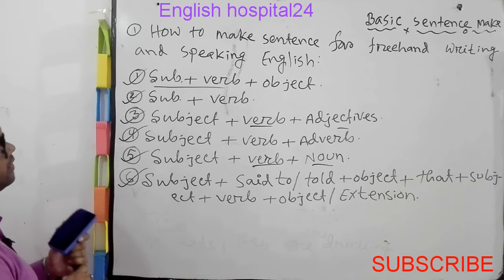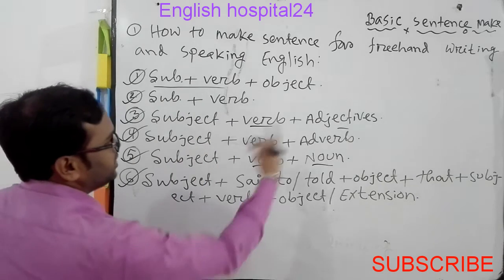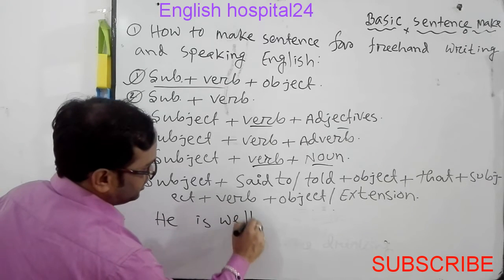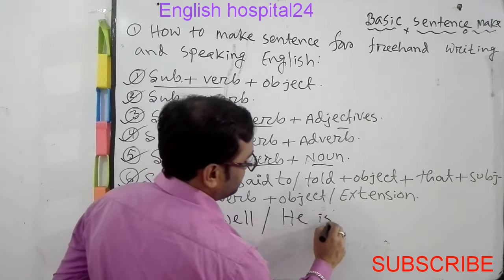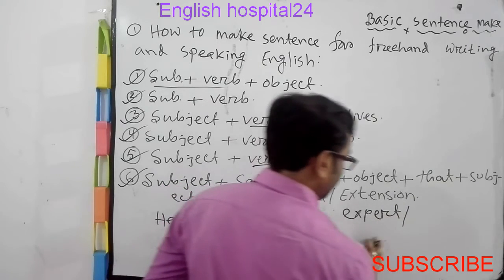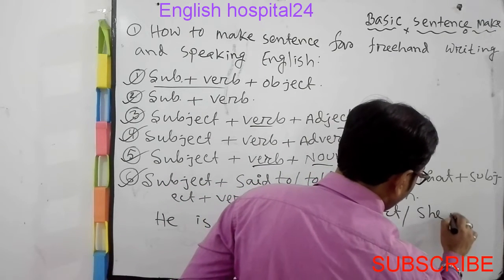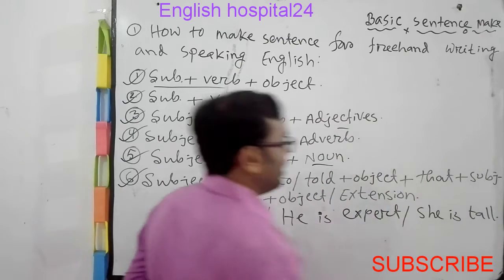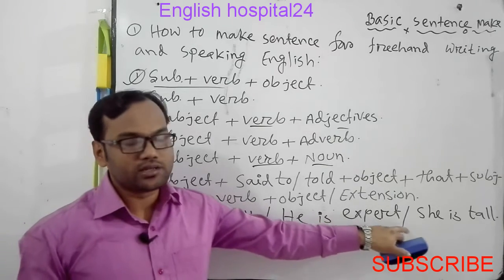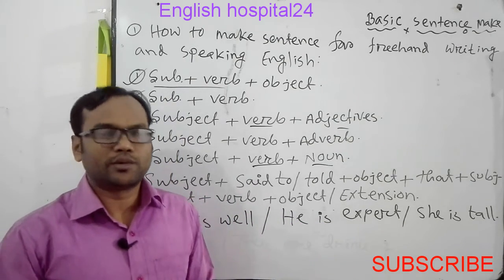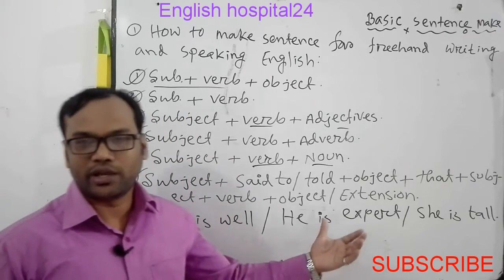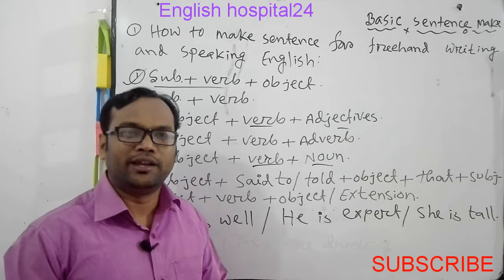For Subject-Verb-Adjective: he is well, he is expert, she is tall. This is the subject-verb-adjective structure. Sometimes we say he is a good teacher, good student, ideal student — these represent sentences using this structure.